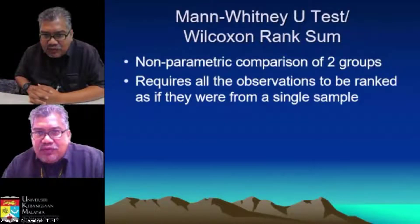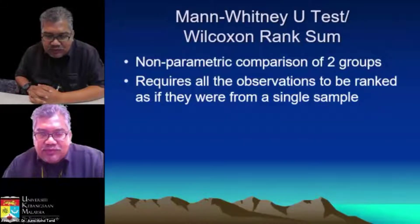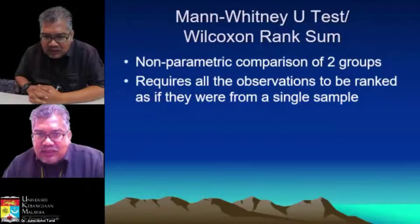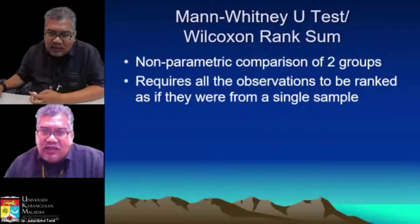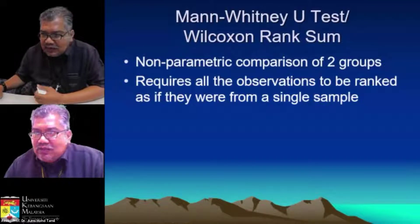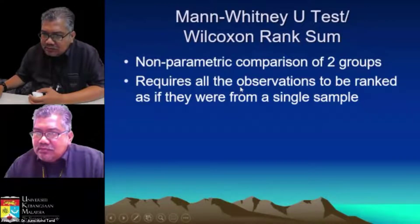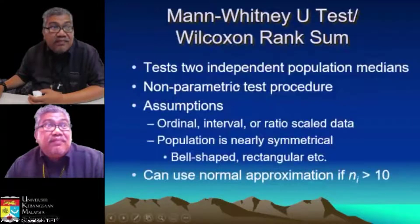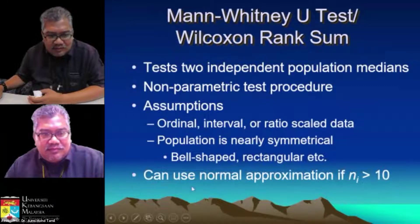The first one we are going to do is the Wilcoxon rank sum test. Basically, you have two groups. The data you are trying to compare is continuous or ordinal data, and you need to compare these two groups. If it is continuous data, it tends to be not normally distributed.